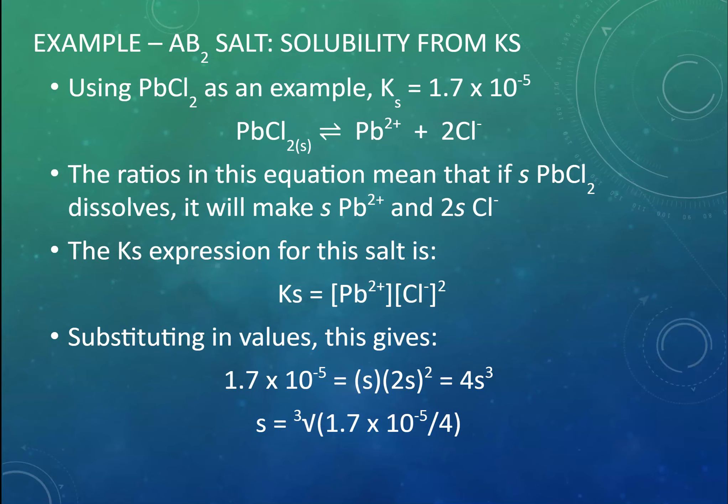Which we can then rearrange so that S is equal to the cubed root of 1.7 × 10⁻⁵ over 4. Now you can see how I've got those numbers in brackets and that is really important to do on your calculator. Or you work it one bit out first and then do the next step. If you don't, then you will mess up your calculation. Doing it like this however, you will find that S is equal to 0.0162 moles per litre.